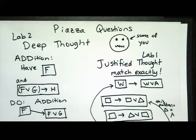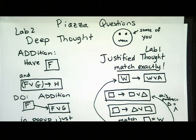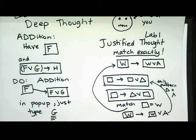On Deep Thought, several of you have asked questions about addition. If you're having trouble with a problem on Deep Thought — like you need a variable that isn't even on the page — you need to use addition. Here's an example: let's say you have F that you already know, and you already know F or G implies H. You can use addition to say that F implies F or G. Click on F, then click the addition button, and it will ask what you want to add. Just type G — just tell it what you want to come after the OR. Don't type 'F or G' because then you'll get 'F or F or G', and don't type 'OR G' because then you'll get 'F or OR G' and probably an error.